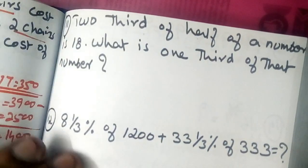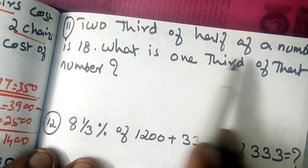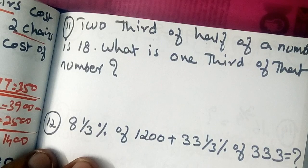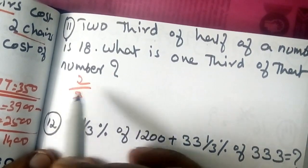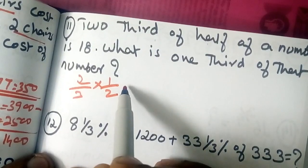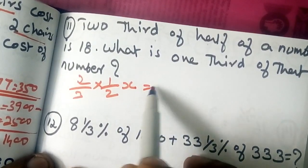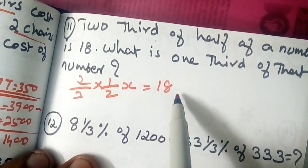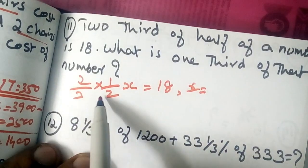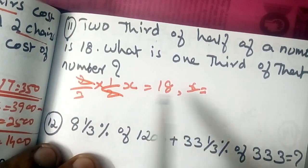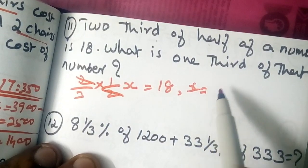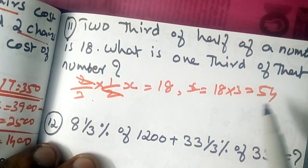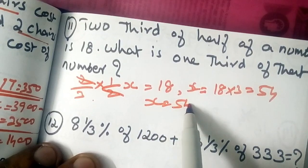Question number 11: 2-thirds of half of a number is 18. What is one-third of that number? Let the number be x. So 2/3 of half of x is equal to 18. Then x is equal to 18 into 3, which means x is equal to 54.